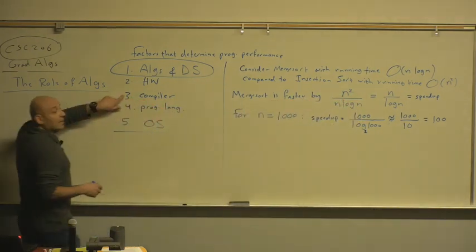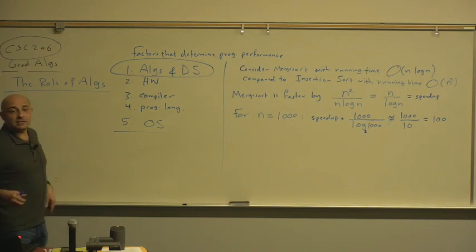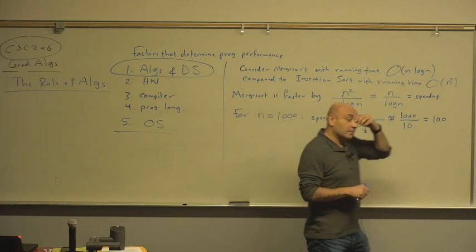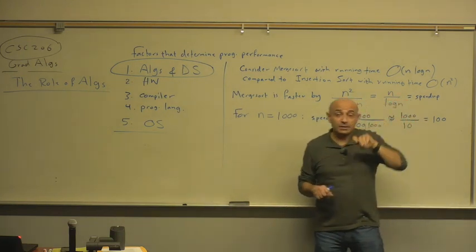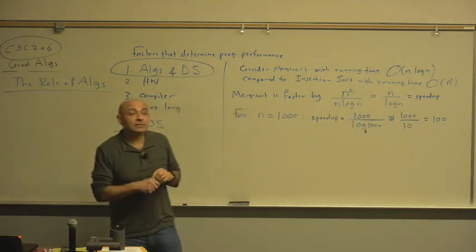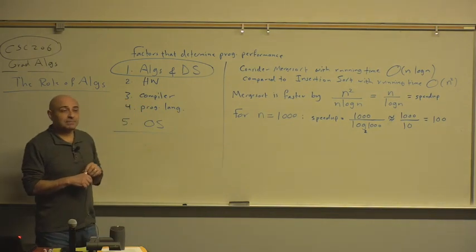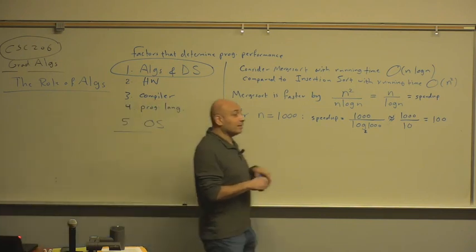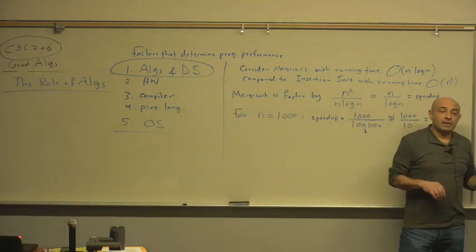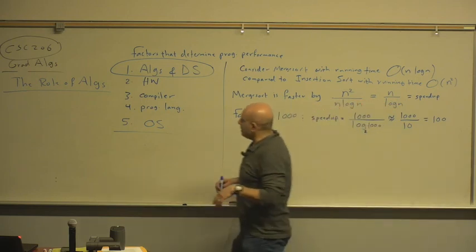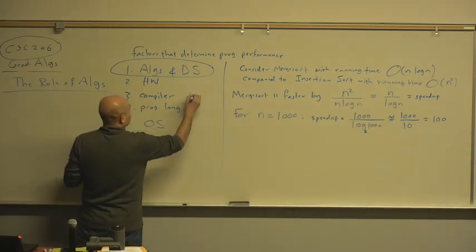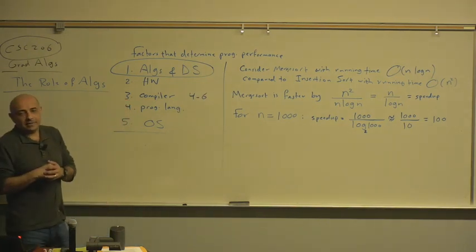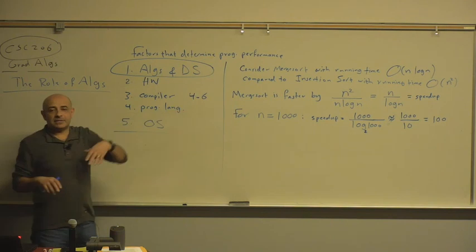If you look at the compiler, compiler optimizations, how much speedup do compiler optimizations give you typically? How many people have taken the compiler course? So how much speedup? I don't remember. Maybe it was late. Does it give you 100x speedup? No. Well, the compiler speedup is going to be somewhere in the range four to six times maybe. It's within the same order. It's not going to give you 100 times speedup.